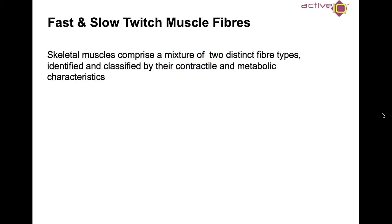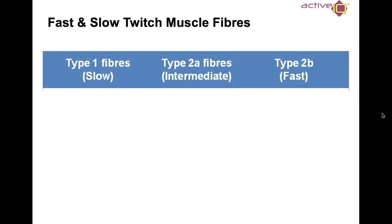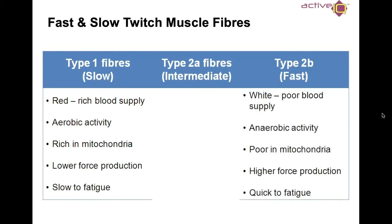We've got fast and slow twitch muscle fibres. Skeletal muscle comprises a mixture of two distinctive fibre types: slow twitch Type 1 and fast twitch Type 2. Slow twitch fibres are generally red in colour, used for aerobic activity, and are rich in mitochondria. Fast twitch fibres are white, have a poor blood supply, are used for anaerobic activity, and are poor in mitochondria. The mitochondria is the powerhouse of the cell. Type 1 fibres need lots of energy to keep going, whereas faster events require less. Fast twitch fibres are quicker to fatigue, and slow twitch fibres are slow to fatigue.